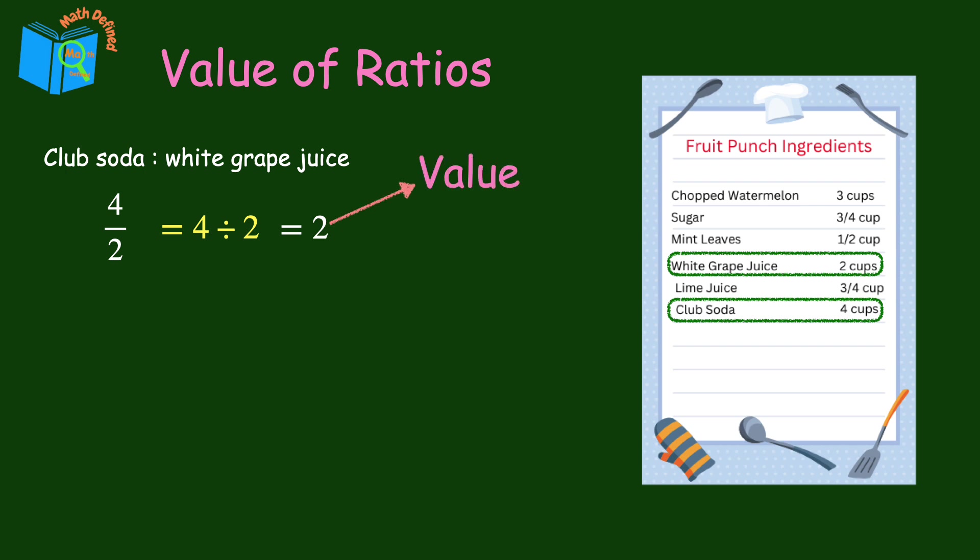So the value of this ratio is two. The value tells us that the amount of club soda is two times the amount of white grape juice. The value of the ratio helps us understand how much of one quantity there is in relation to another.